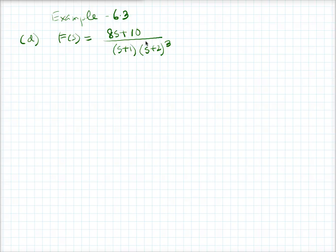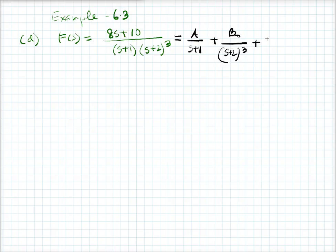In that case, if you do the partial fraction, you have to write it in this form. So this should be A over (s+1), then B0 over (s+2) whole cube, B1 over (s+2) squared, and B2 over (s+2) whole cube. So you need to find the values of A, B0, B1, and B2.